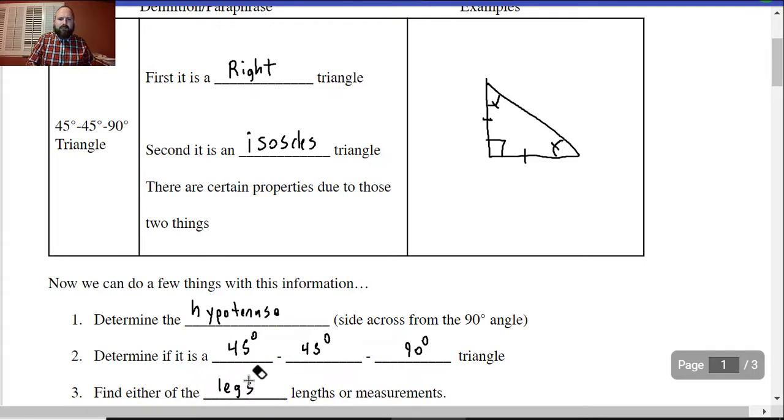And so we're either going to have to find the leg length or measurements. Just one leg because they're both the same. So we're going to have to figure that out. We're going to find the hypotenuse or a leg from this information if it's a 45-45-90 degree triangle.